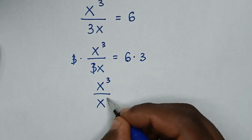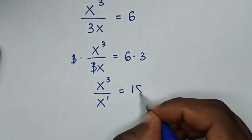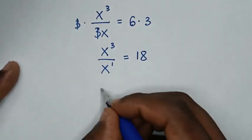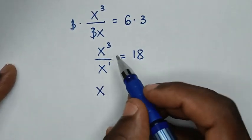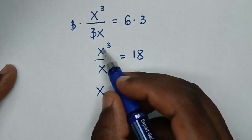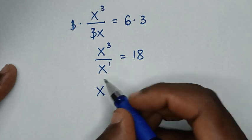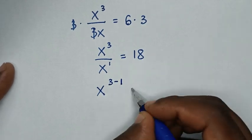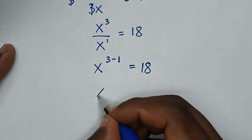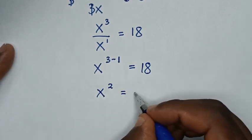x is the same as x power 1, so this equals 18. Then it will be x power 3 minus 1, because of the same base of x — we take this power minus this power. So it will be 3 minus 1, giving us x power 2 is equal to 18.